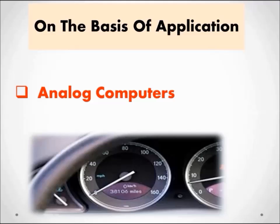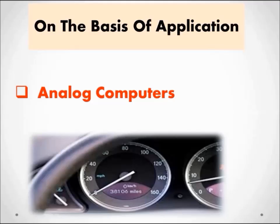Analog computers are computers that measure physical quantities. Physical quantities means things like length, height, temperature, etc., and they convert those measurements into a digit — into a number.